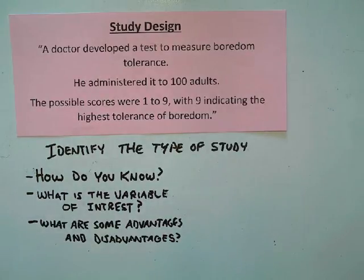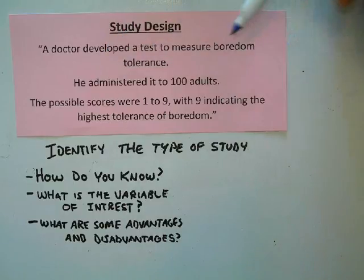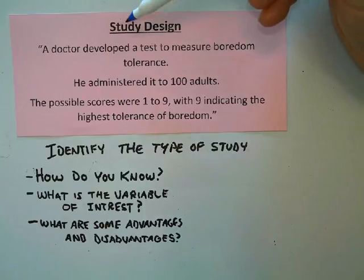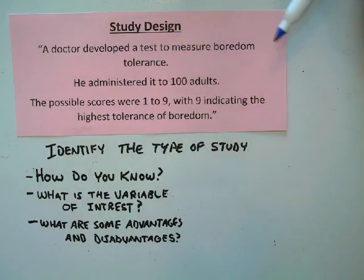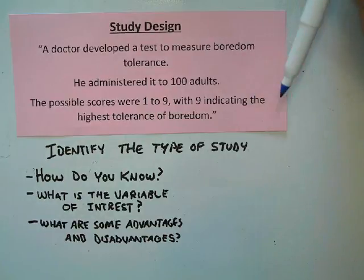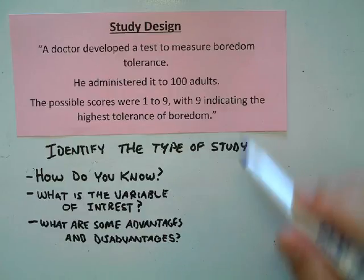Let's take a look at this example. We want to identify the type of study and explain why we are choosing that type. A doctor developed a test to measure boredom tolerance and administered it to 100 adults. The possible scores were one to nine, with nine indicating the highest tolerance of boredom.